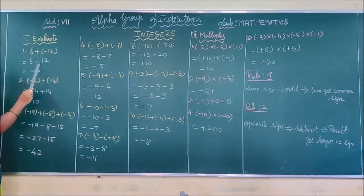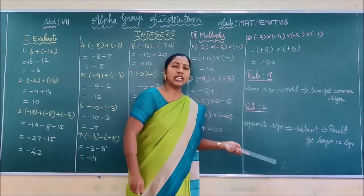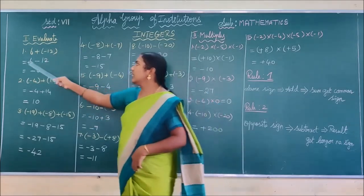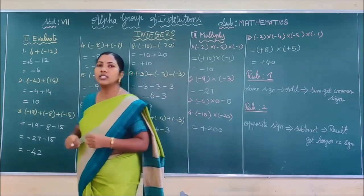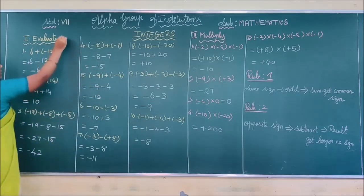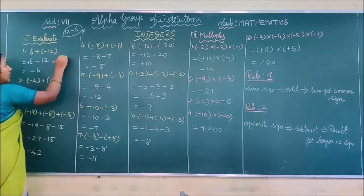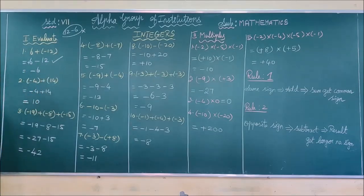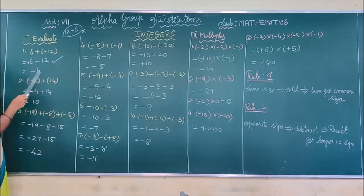So: 6 plus into minus gives minus 12. The symbol of 6 is plus, and the symbol of 12 is minus. According to Rule 2, if the given integers are of opposite sign, you have to subtract. 6 is the smaller number, so you subtract 6 from 12: 12 minus 6 gives 6. Don't change the place of the integers. Write it as 6 plus into minus, minus 12. Then 12 minus 6 = 6, and the larger number's symbol is minus. So the answer is minus 6.